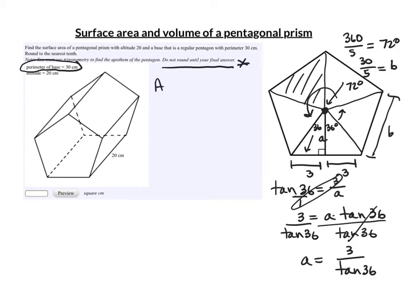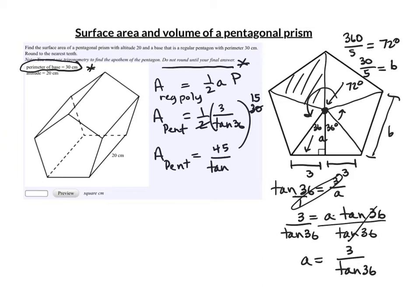Again, we know that the apothem is part of what we need to find the area of the pentagon. So the area of a regular polygon is 1 half the apothem times the perimeter. So the area of our pentagon will be 1 half, 3 divided by the tangent of 36, times the perimeter which was 30. So let's simplify this. The 2 will cancel with the 30 and that becomes 15, and 3 times 15 is 45. So it's 45 divided by the tangent of 36. We have the area of the pentagon now.